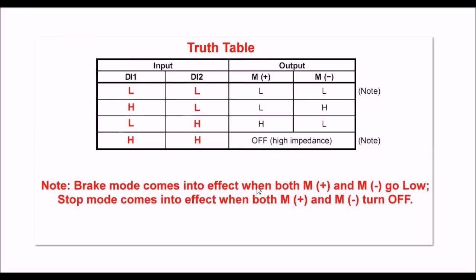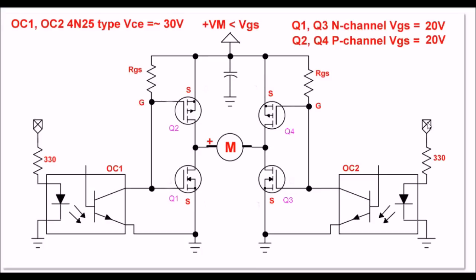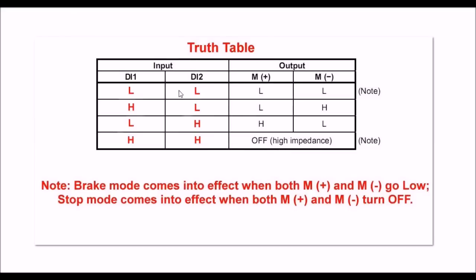This table here tells you the inputs, that is, this input and that input versus the motor output. If you have a low and a low in, the motor plus and minus will be low. High, low, and so forth. We will walk through this, but there's two things you need to note.